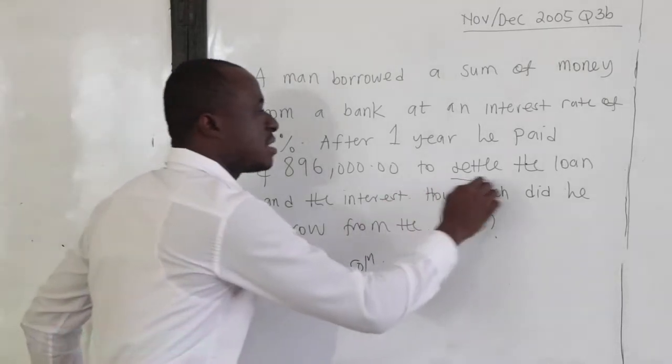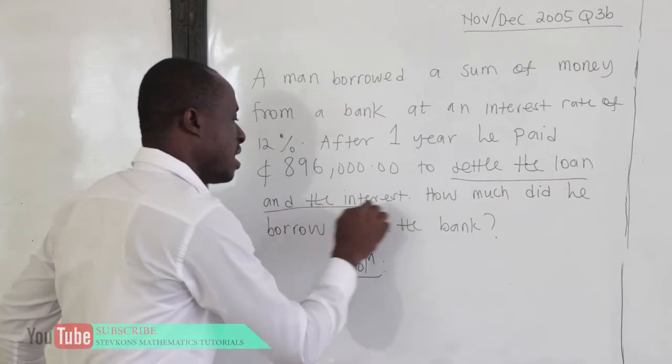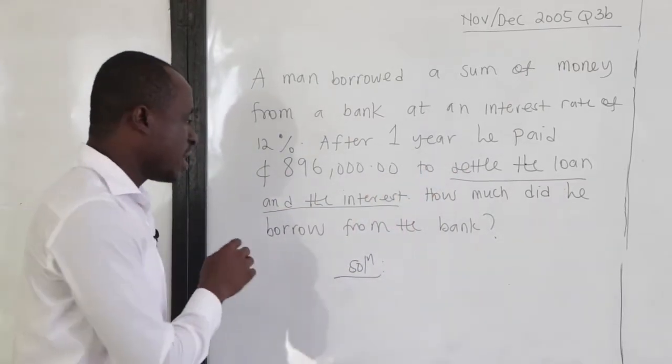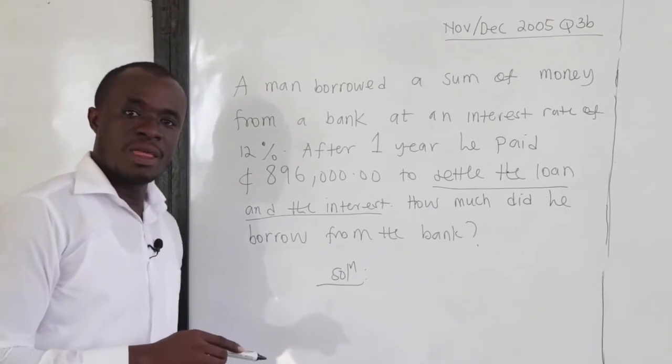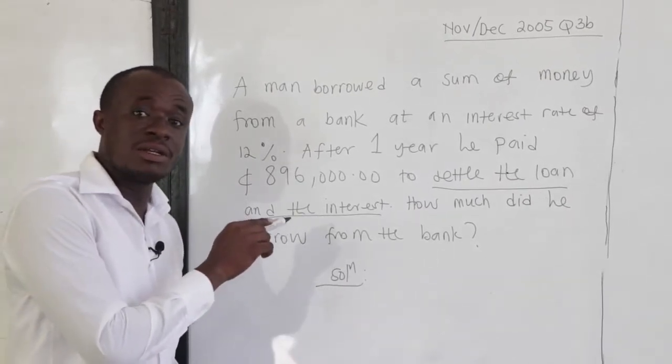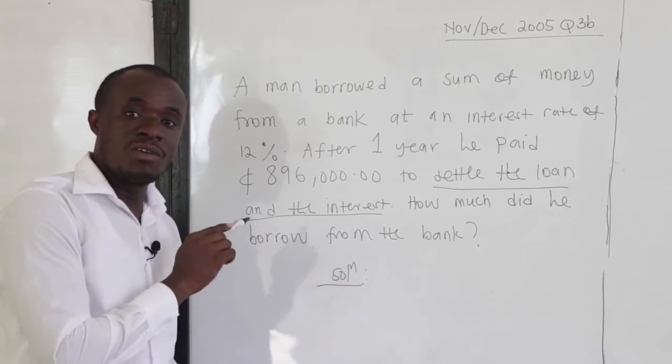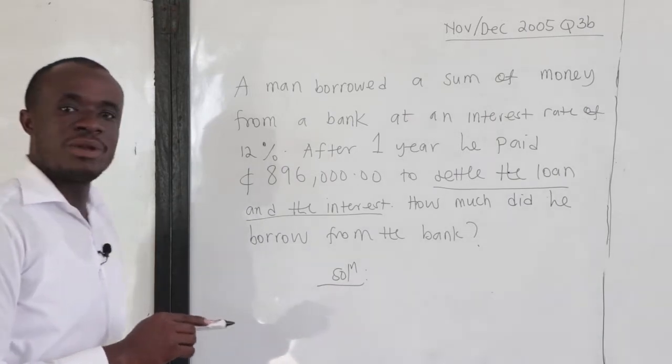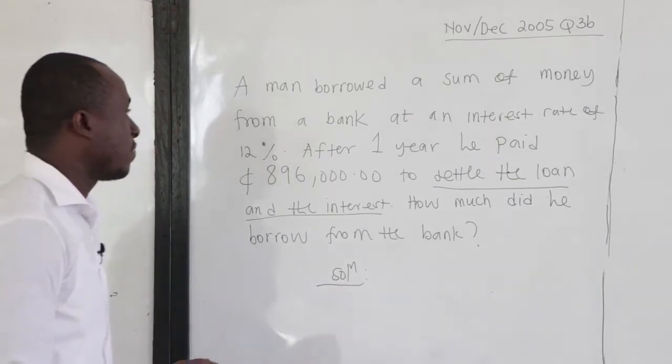Take note of that, to settle the loan and the interest. The loan, that is the principal and then the interest. Now clearly, what is the $896,000? This $896,000 is the amount that has been given to us. The question is, how much did he borrow from the bank? So we want to find the principal.